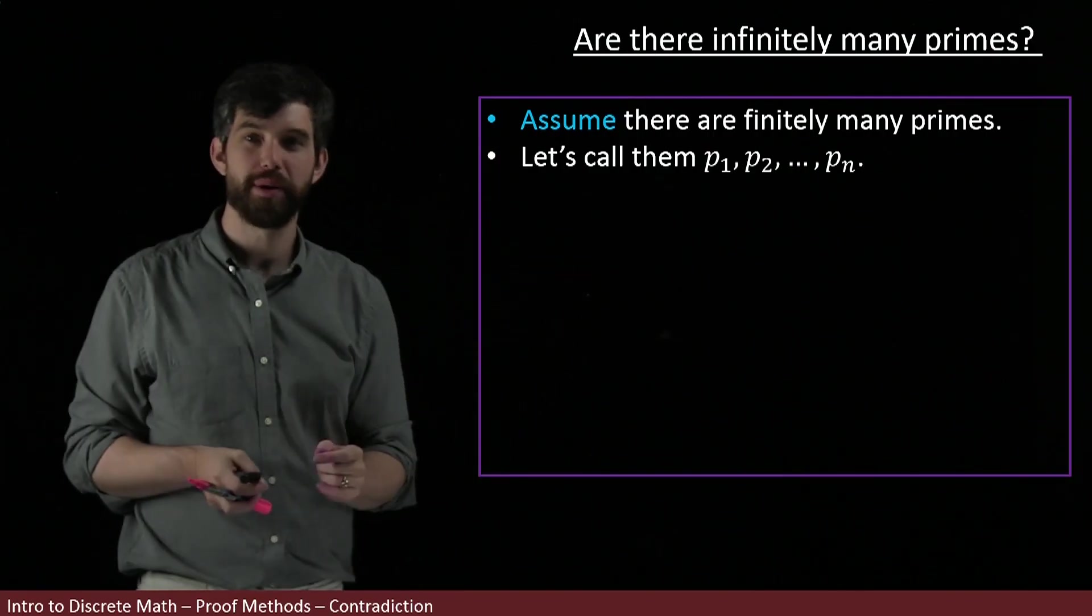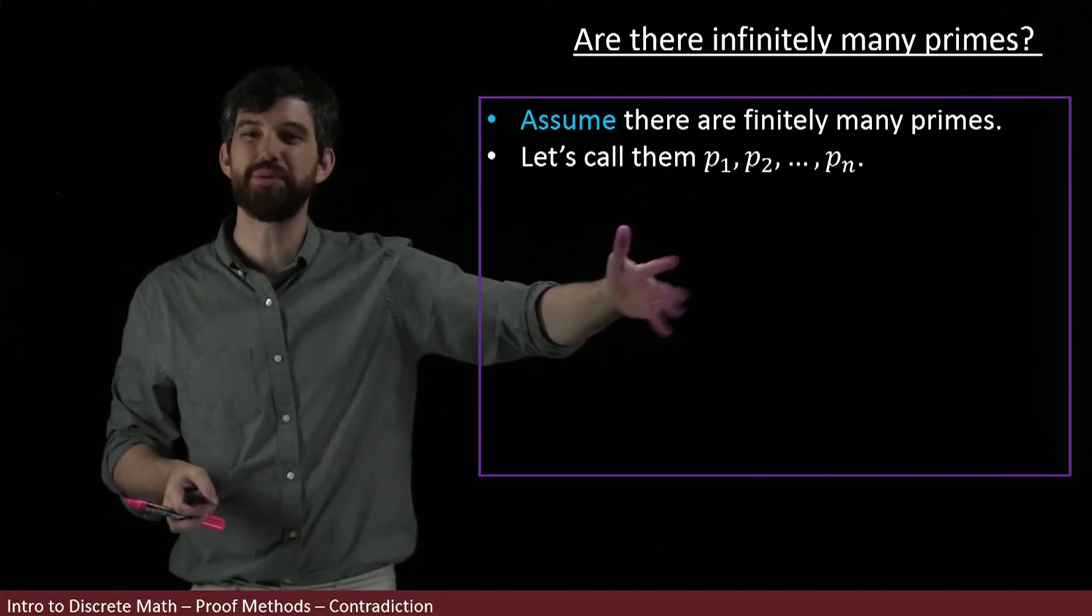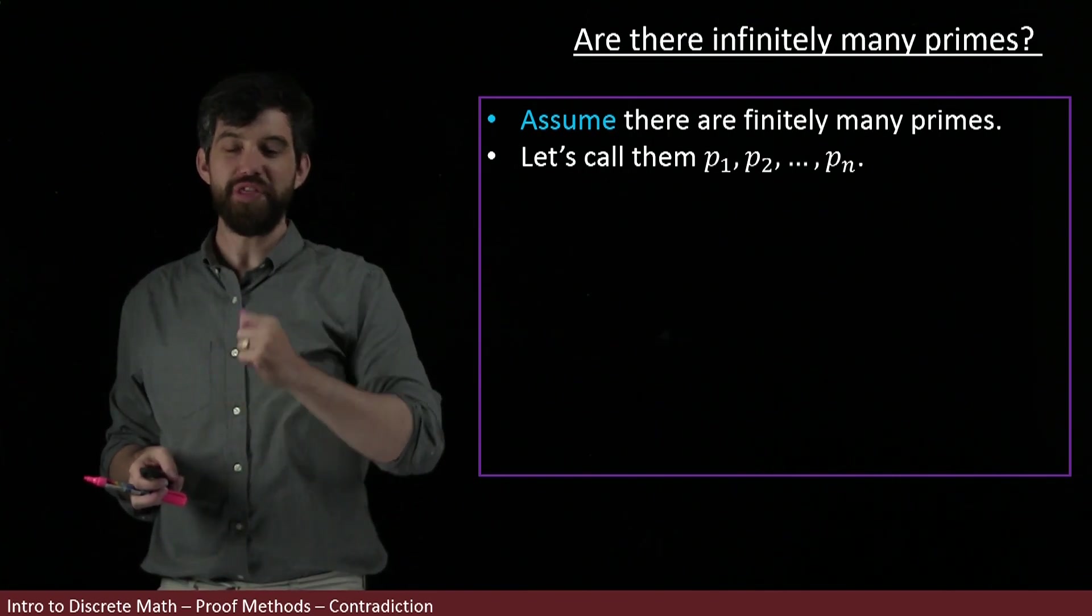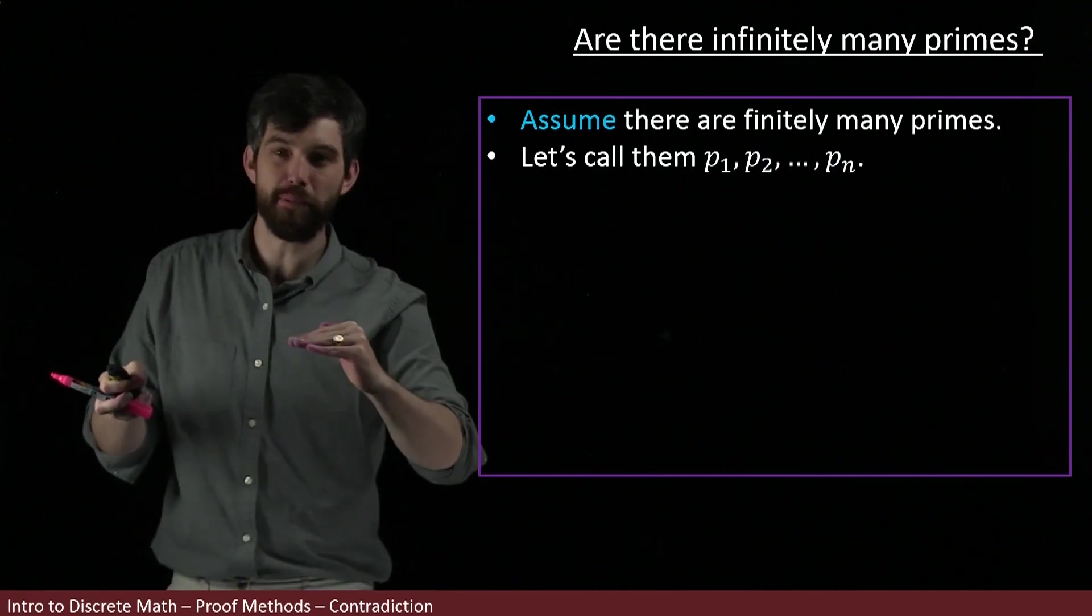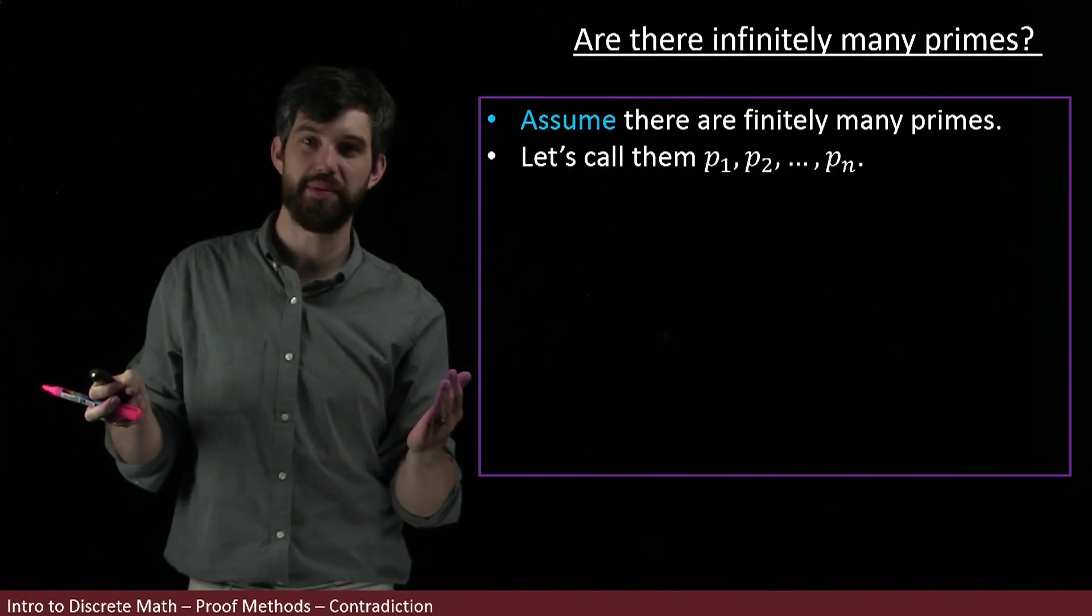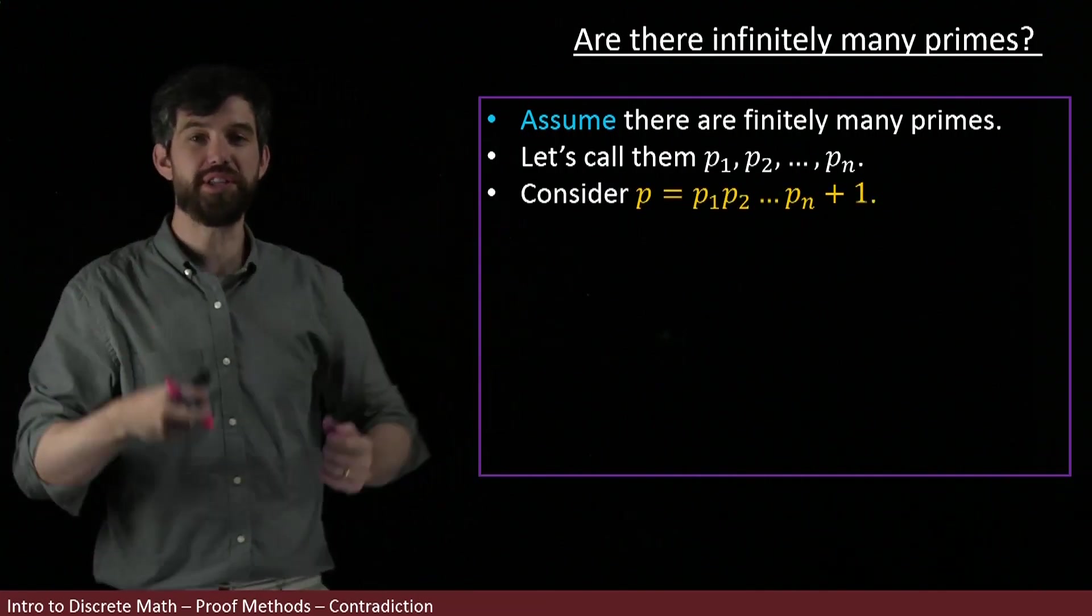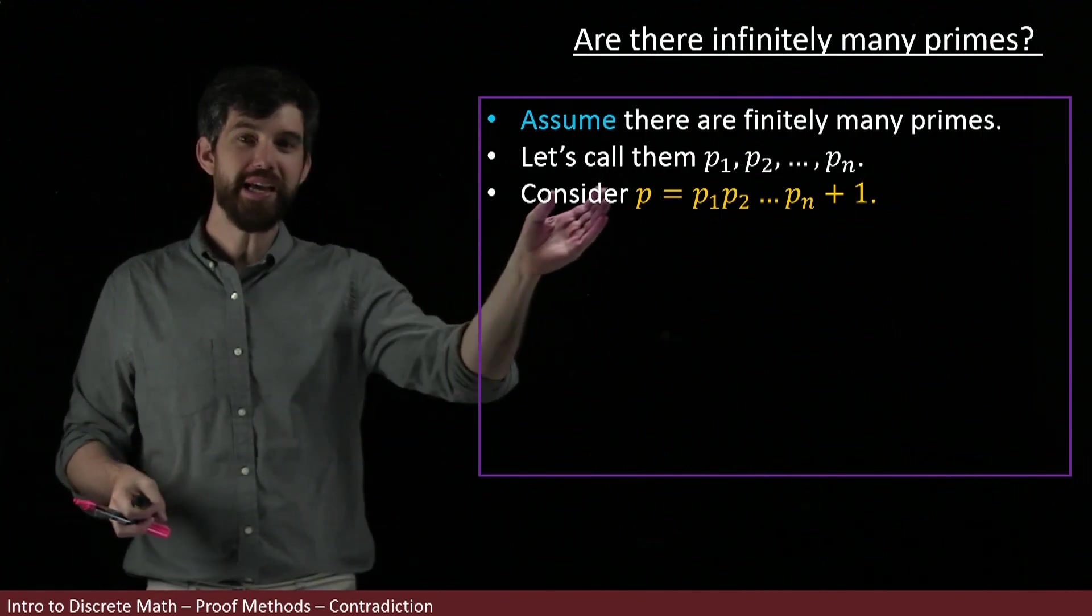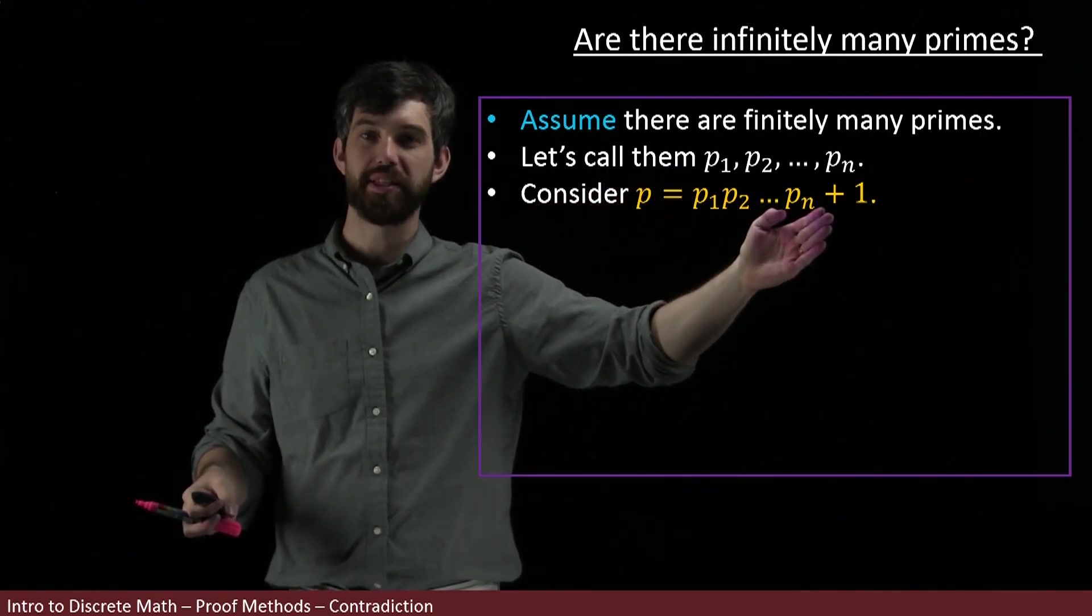The way this proof works is that I'm going to give you a new expression built out of p₁ down to pₙ. That new thing is going to turn out to be both prime and not prime, which is nonsensical. I'm going to consider p, which is the product of all those finite primes plus 1: p = p₁ × p₂ × ... × pₙ + 1.